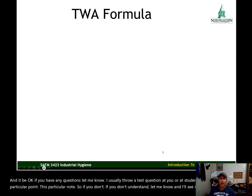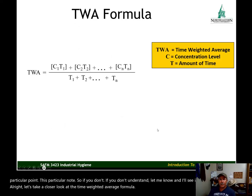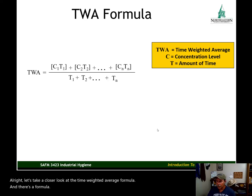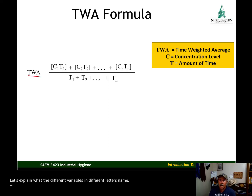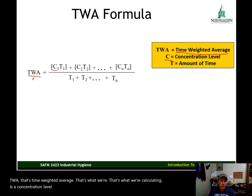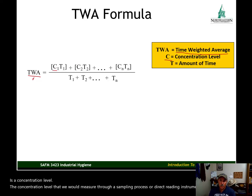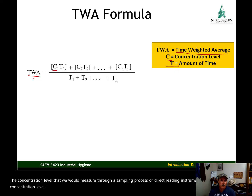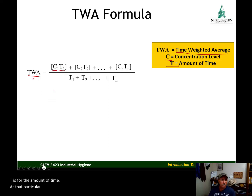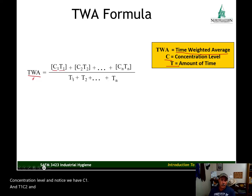Let's take a closer look at the time weighted average formula. TWA stands for time weighted average — that's what we're calculating. C is the concentration level, measured through a sampling process or direct reading instrument. T is the amount of time at that particular concentration level. Notice we have C1 and T1, C2 and T2, and so on.